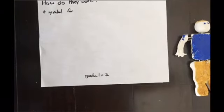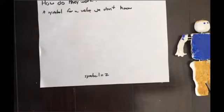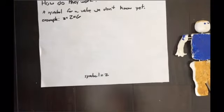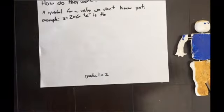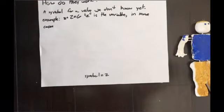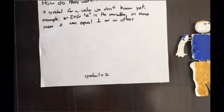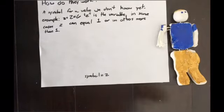Well, a variable is a symbol for a value we don't know yet. An example would be z plus 2 equals 6. z is the variable. In some cases, z can equal 1 or more than 1.